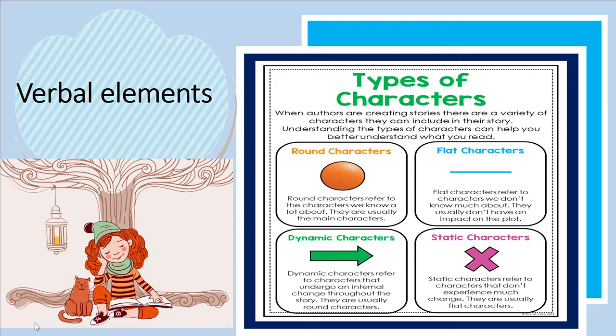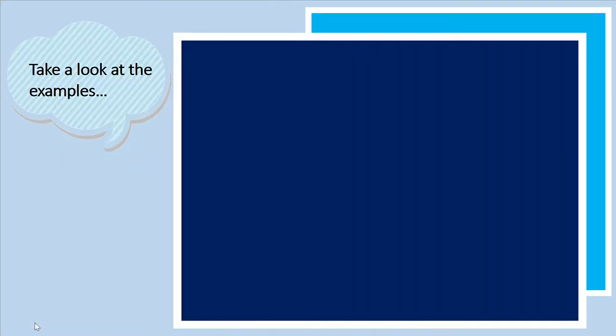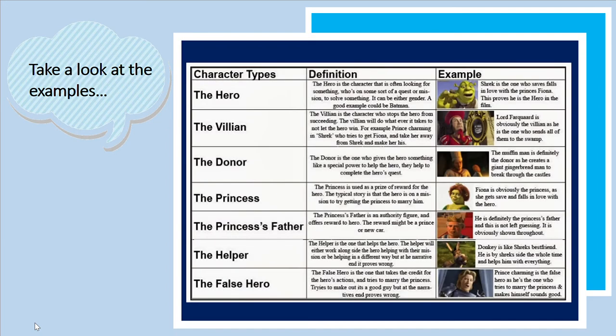A flat character reveals only one or two personality traits in a story and does not change. These are examples of character types based on the story of Shrek. The different character types are the hero, the villain, the donor, the princess, the princess's father, the helper, and the false hero.